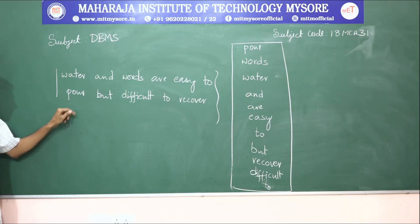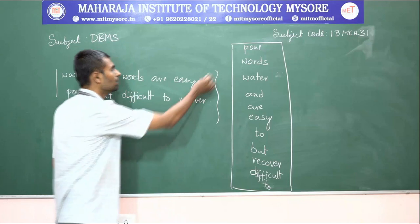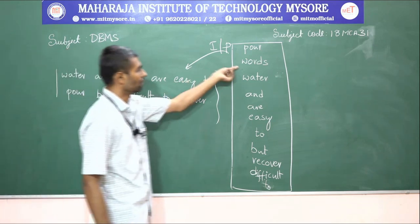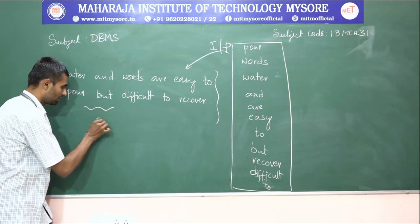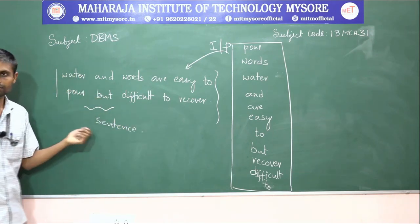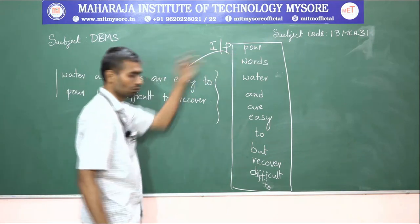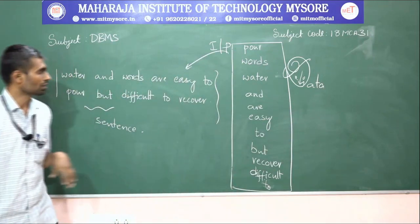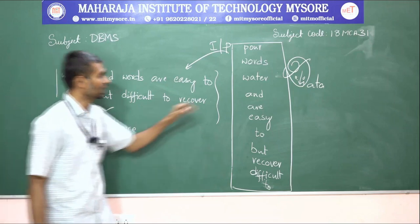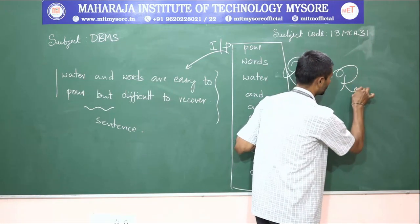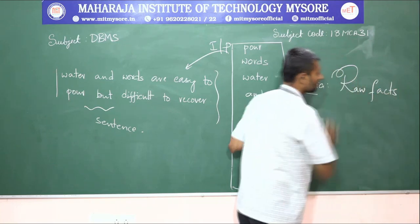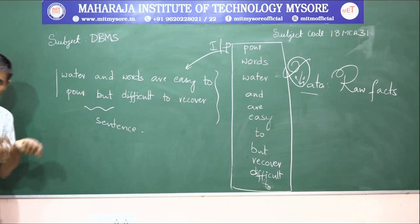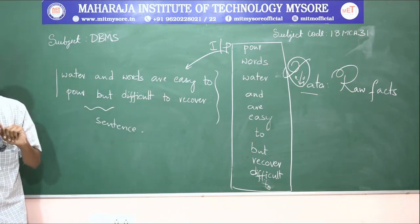So this sentence is framed with the help of these words. Those words become the input for this sentence. What do we call these words? The sentence is giving us some information, conveying something, when compared to the unordered words. The input we used to frame the sentence — we call it by the name data. Data means raw facts which can be stored somewhere.